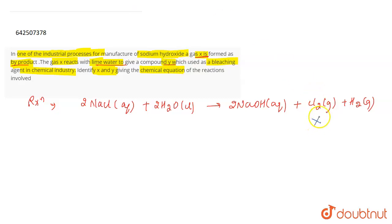The gas X will be chlorine (Cl2) because this chlorine gas reacts with calcium hydroxide, which is lime water, and forms a compound Y.